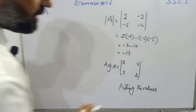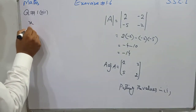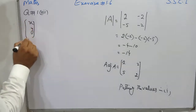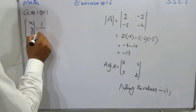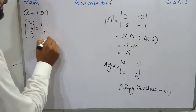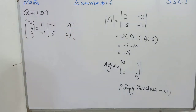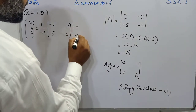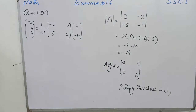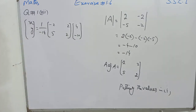Putting the values in equation number one: matrix x, which contains x and y, is equal to one over the determinant of A. The determinant of A is minus 14, multiplied by the adjoint of A, whose values are minus 2, 2, 5, and 2, multiplied by matrix b, which has the values 4 and minus 10. It will be better to first multiply the two matrices and then divide by minus 14.